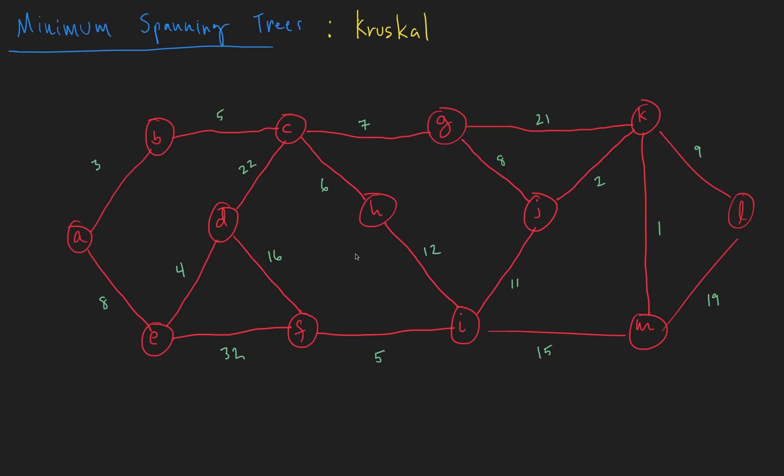Basically what we're going to do is go through each one of these edges from lowest weight to highest weight and add them to the tree, so long as they don't create a cycle. Implementation-wise, we would sort these edges in non-decreasing order, and then go through each one of these edges from left to right and add each of these edges to a tree. We'd build a tree out of those edges.